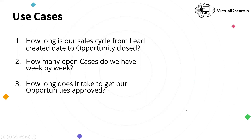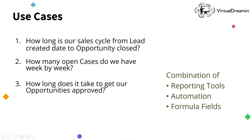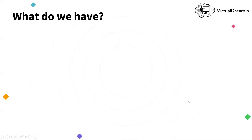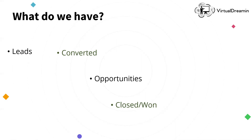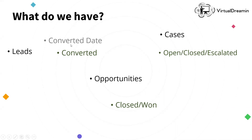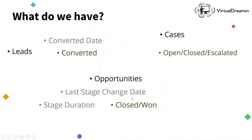How do we answer these questions? We answer them by a combination of reporting tools, automation, and the use of formula fields. First, let's have a look at what we already have in Salesforce. We do have several true-false tags — for example, on leads the 'converted' yes or no, on opportunities 'closed' or 'won' yes or no, and on cases tags like open, closed, or escalated. We also have further fields, such as the converted date on leads, last stage change date, stage duration on opportunity, or the age on cases.